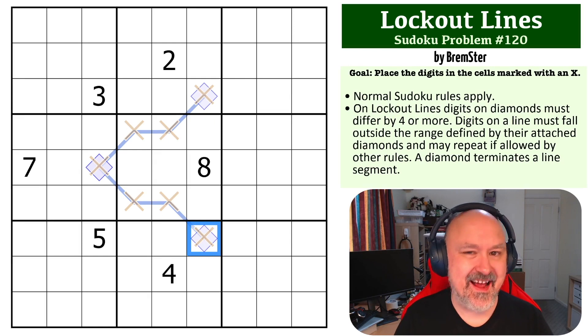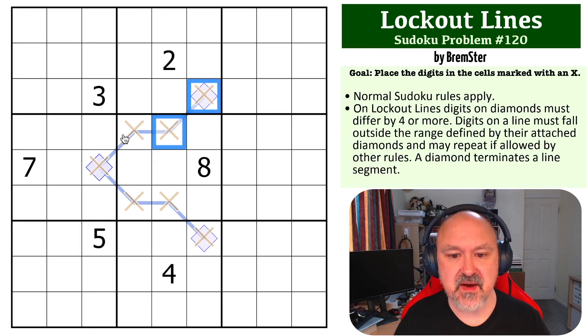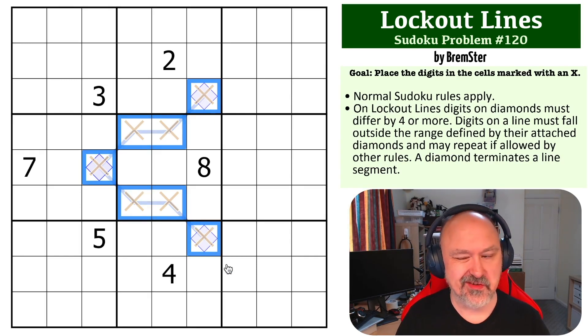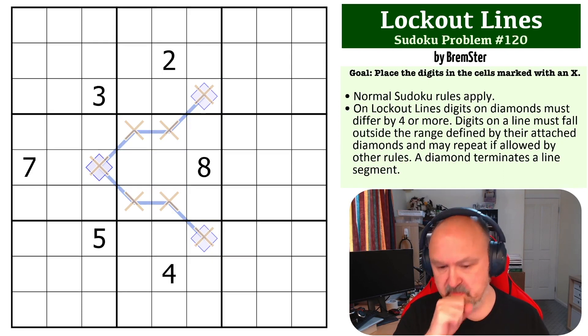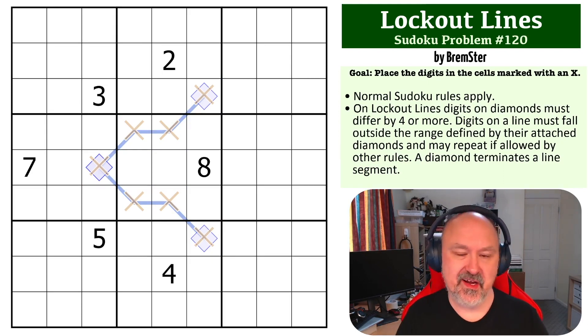This is one I created, and it's a lockout line problem. The goal on this one is to place the digits in the cells marked with Xs, which is basically all of the digits along the lines. There is a link below where you can get a copy of this grid, so you can try it for yourself.